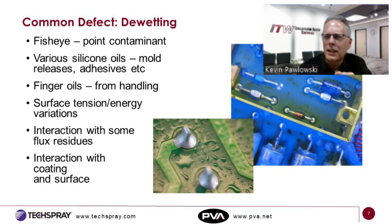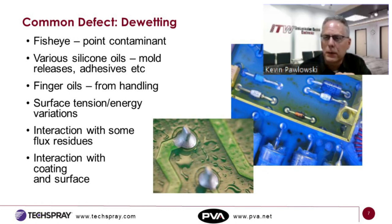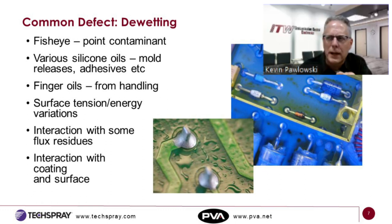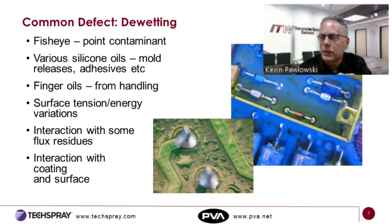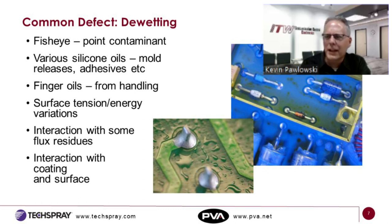I've seen coatings back away from taped areas, pointing to adhesive with a little silicone in it. Fisheyes suggest particulates — maybe scoring contamination. If dewetting is around solder joints, it could be a flux issue. So the position of the dewetting defect really tells the story. When you call us, the first thing we're going to ask for is photos — it really pays to take photos of your defect.